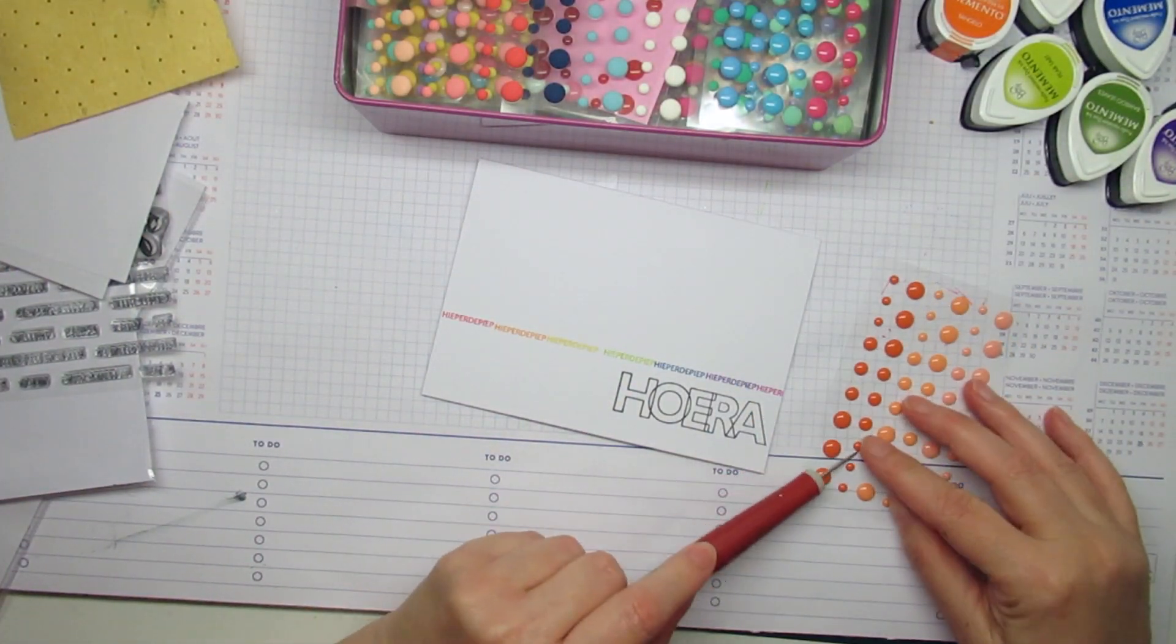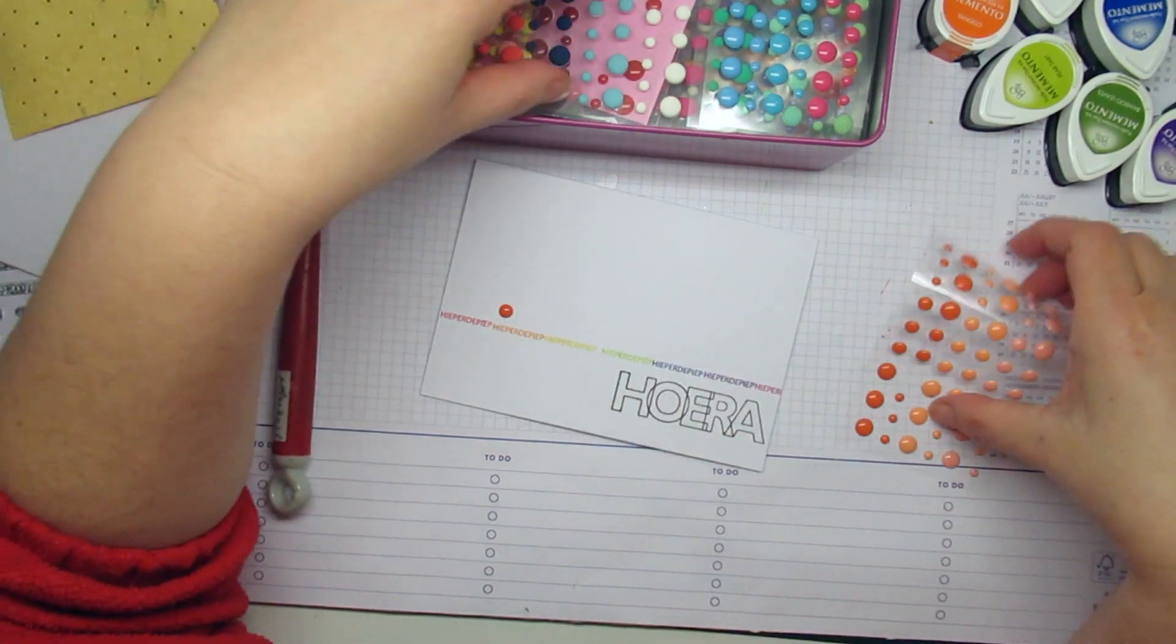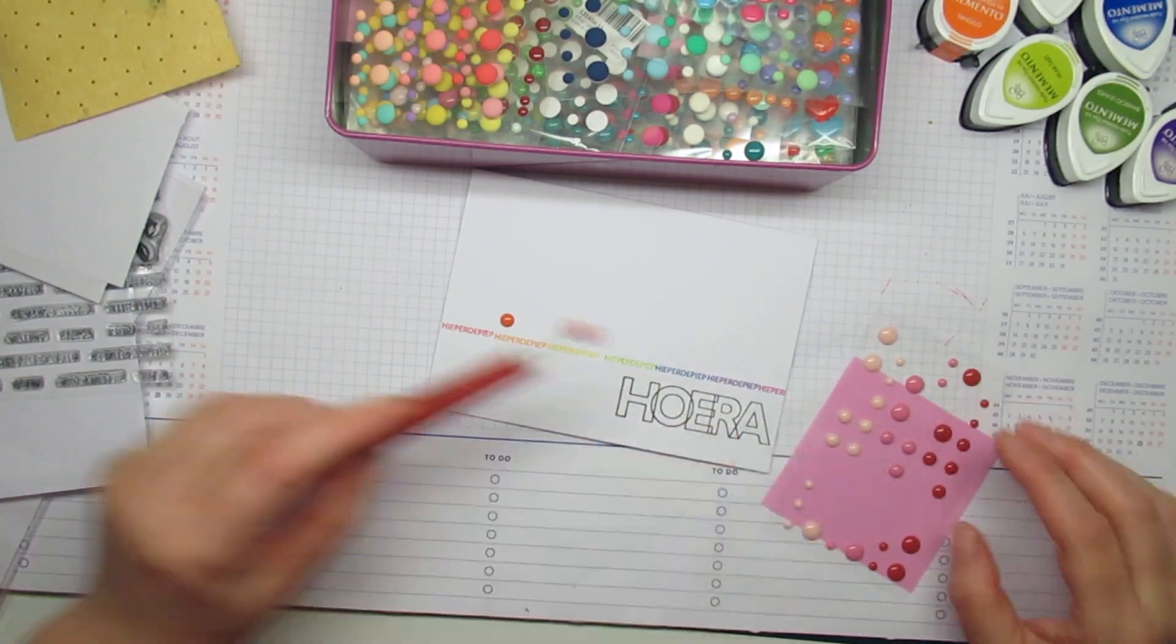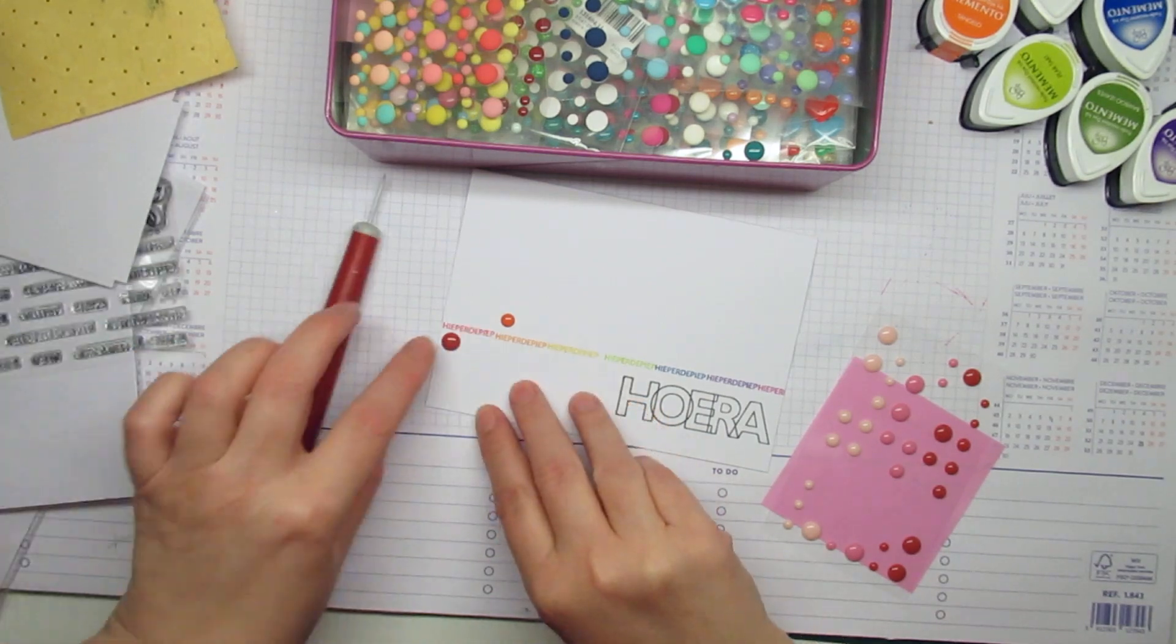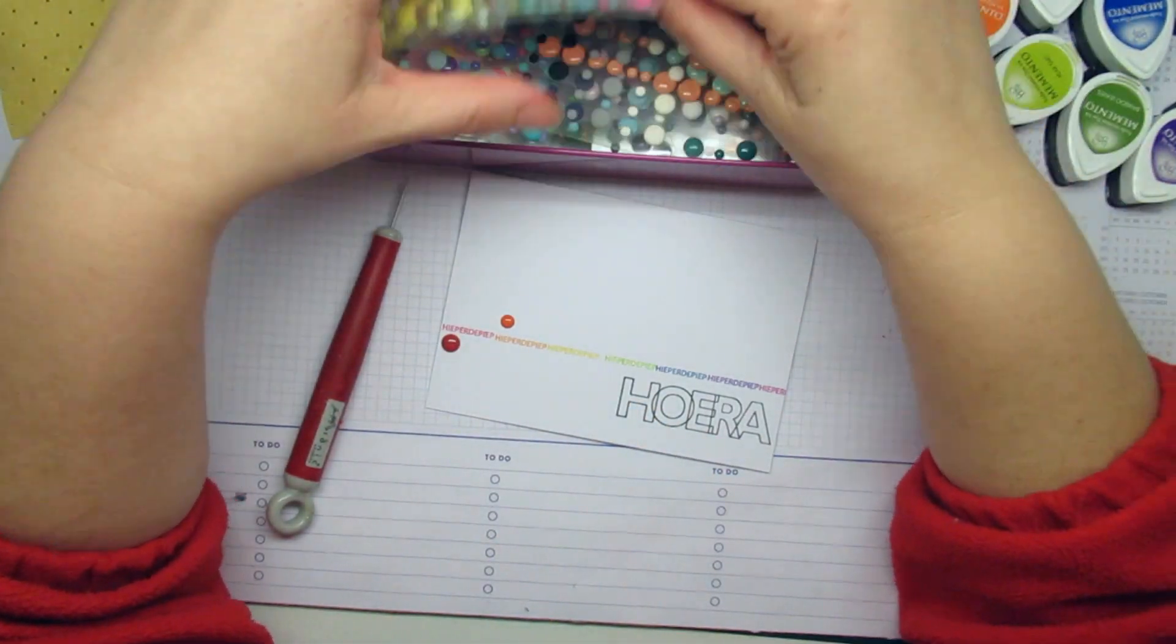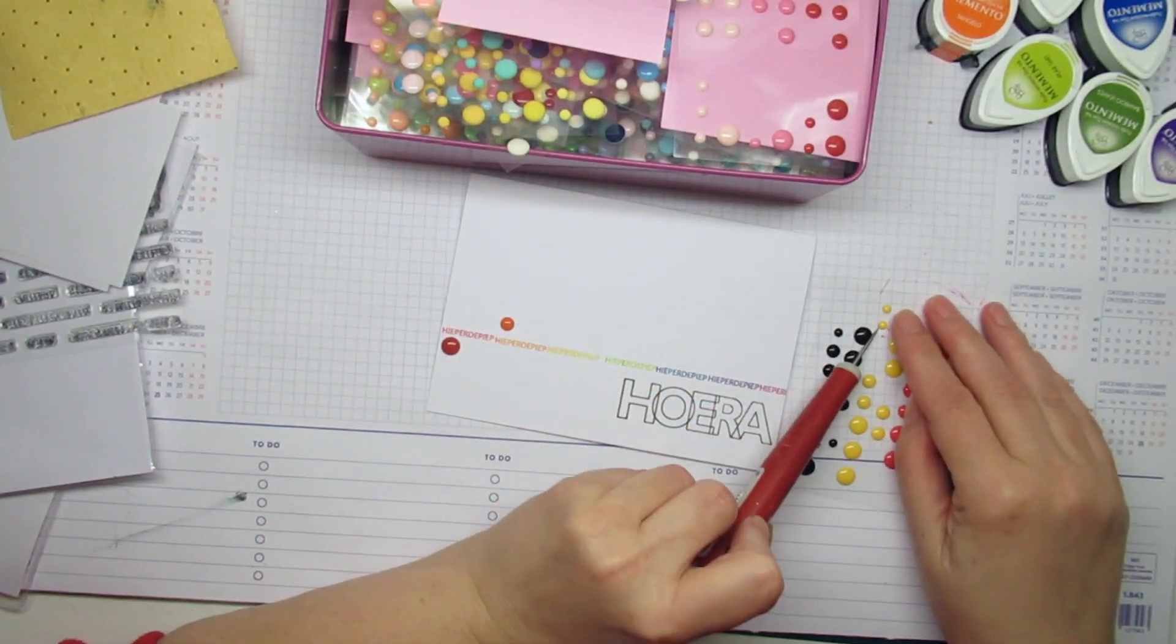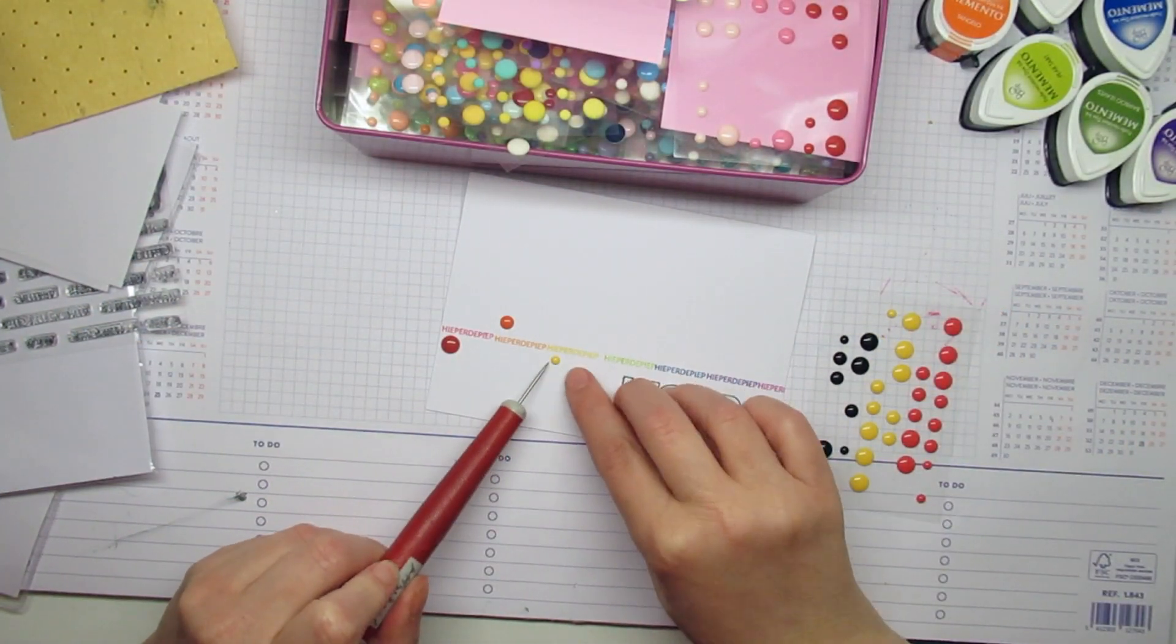And here are my enamel dots and I'm putting them in zigzaggy line and I do the darkest colors the biggest and the lightest the smallest, the brightest.